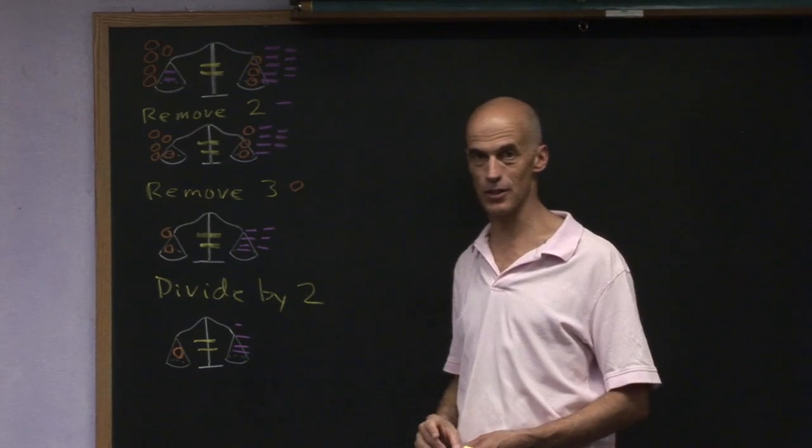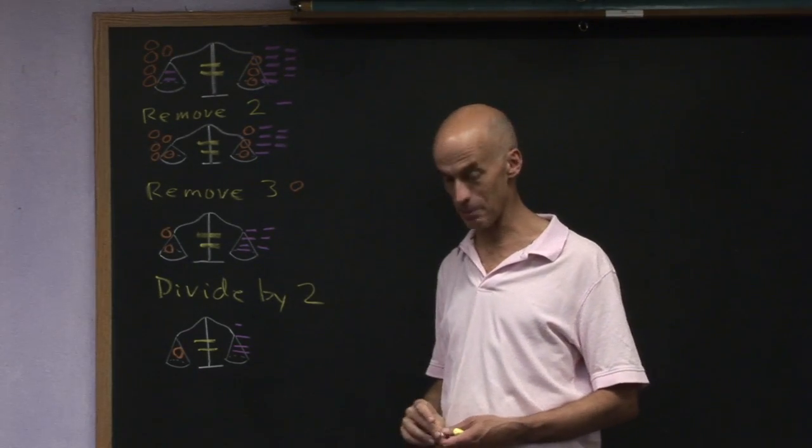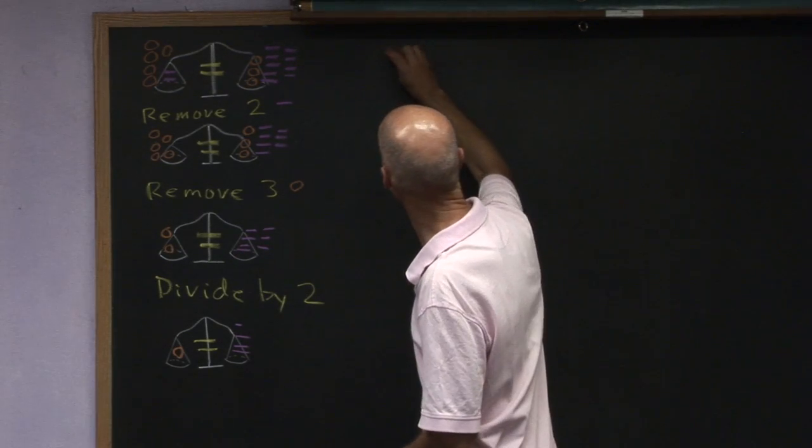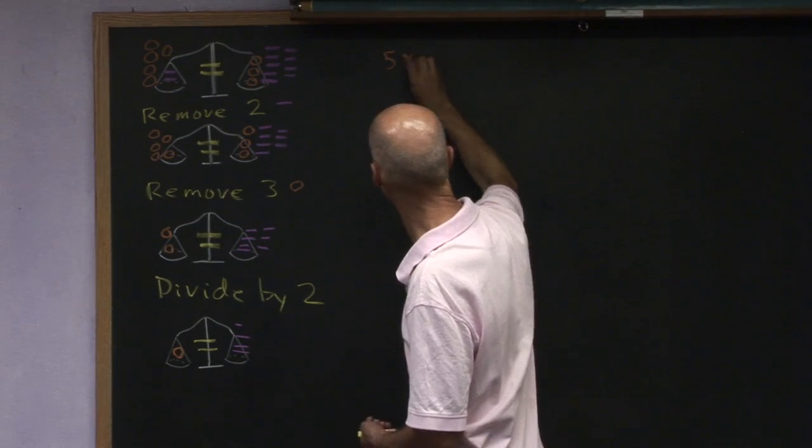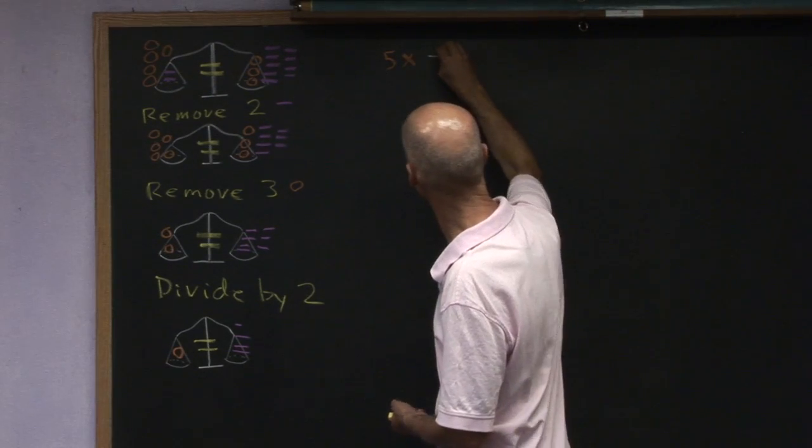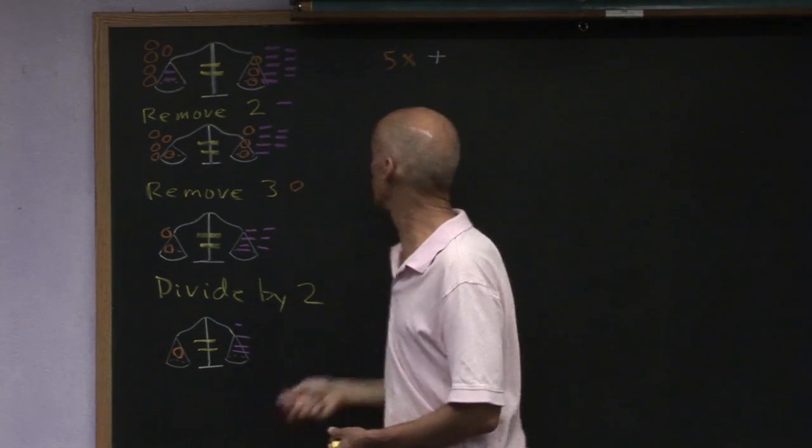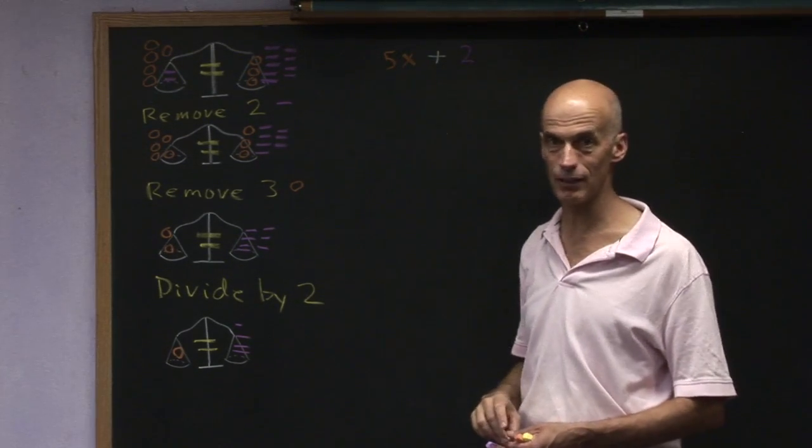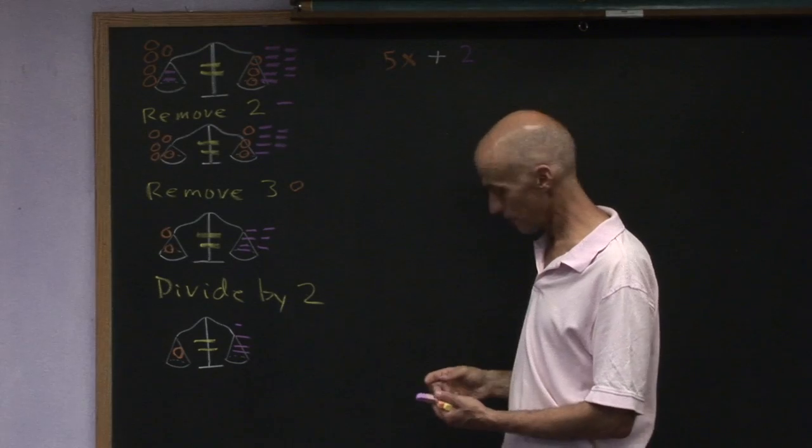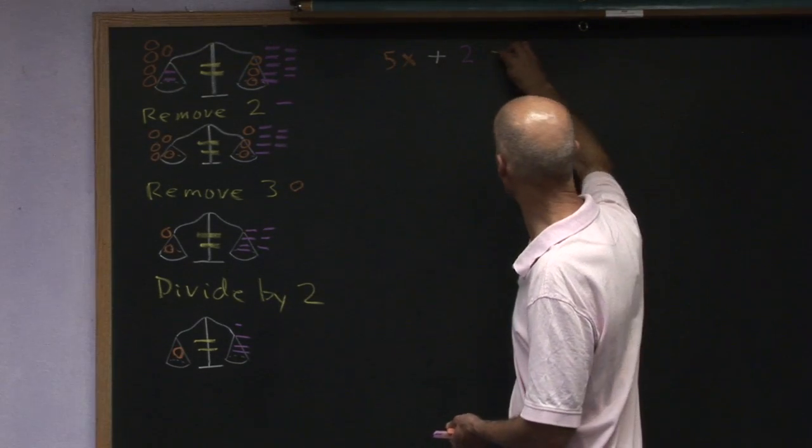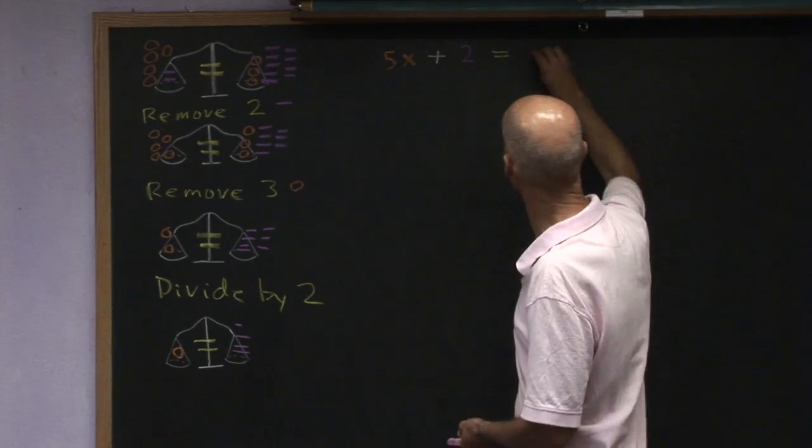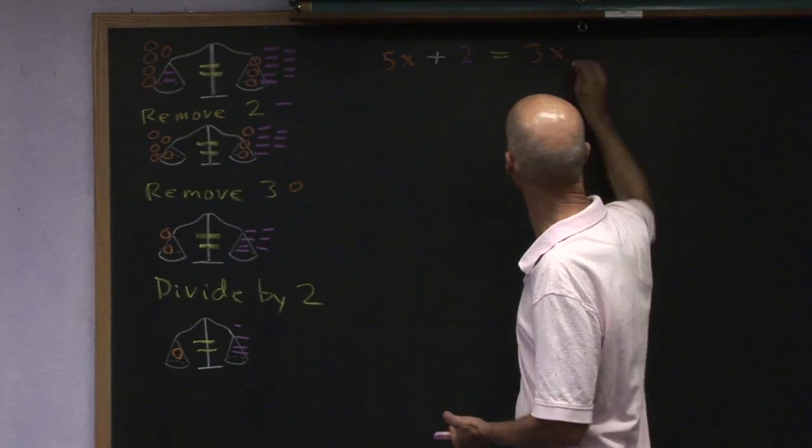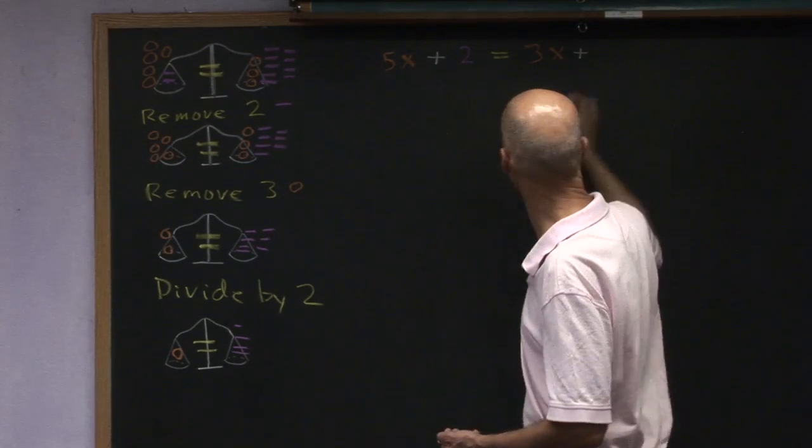We didn't know how many hex nuts were inside each sack. So each sack is represented by an X. And so here I can say that if I have five sacks plus two hex nuts, there's no variable attached to it because we know exactly how much a hex nut is, that is going to be equal to three sacks and nine hex nuts.